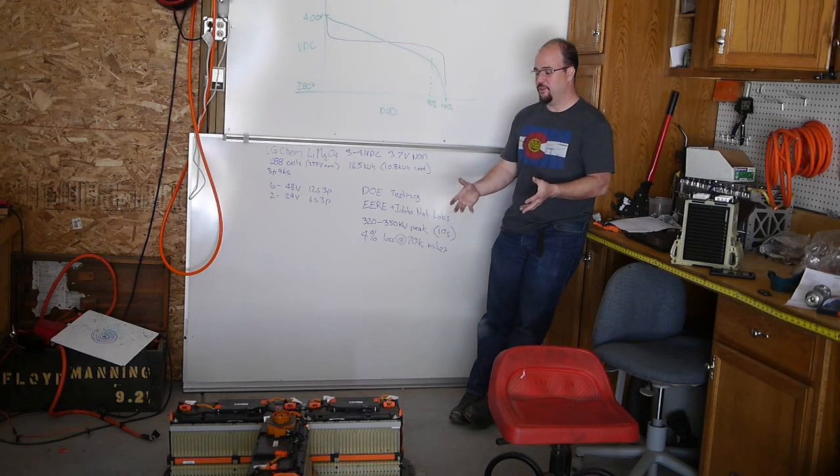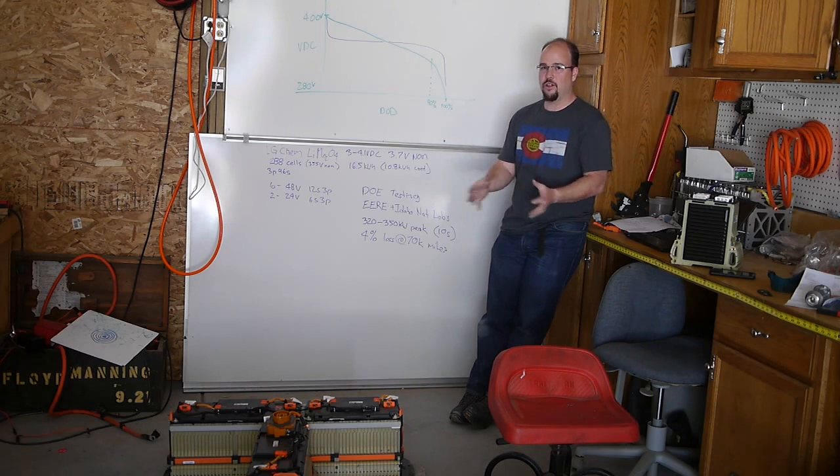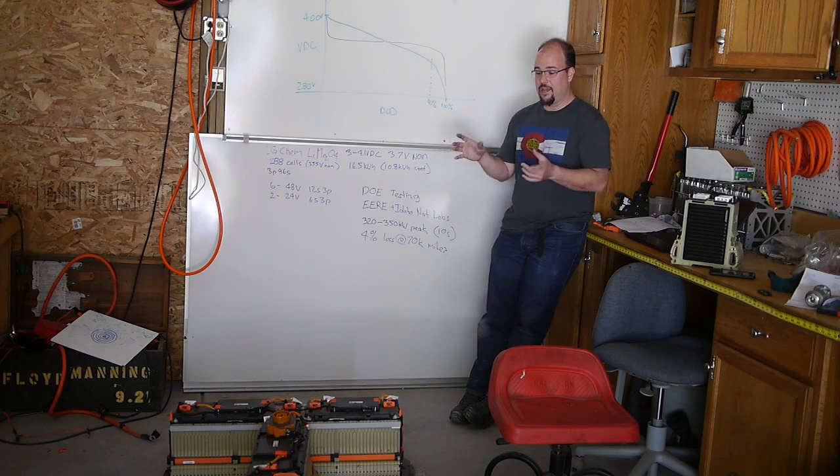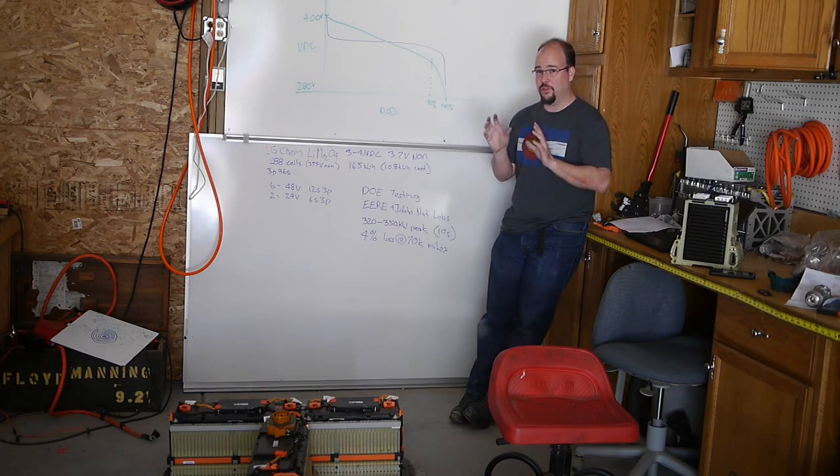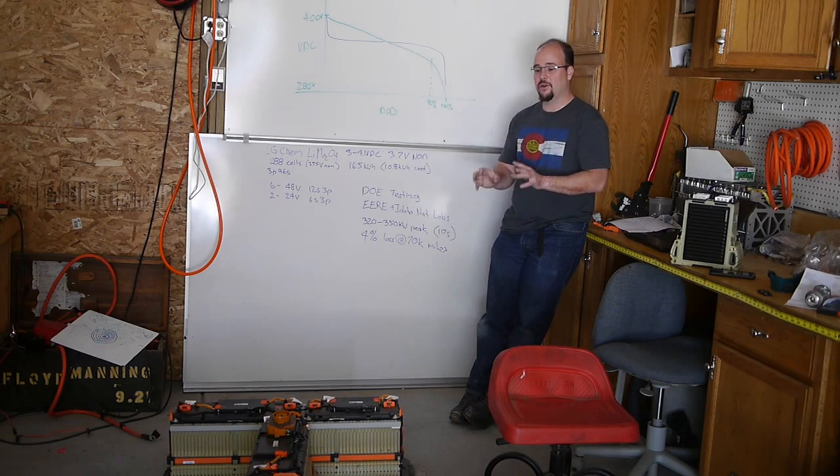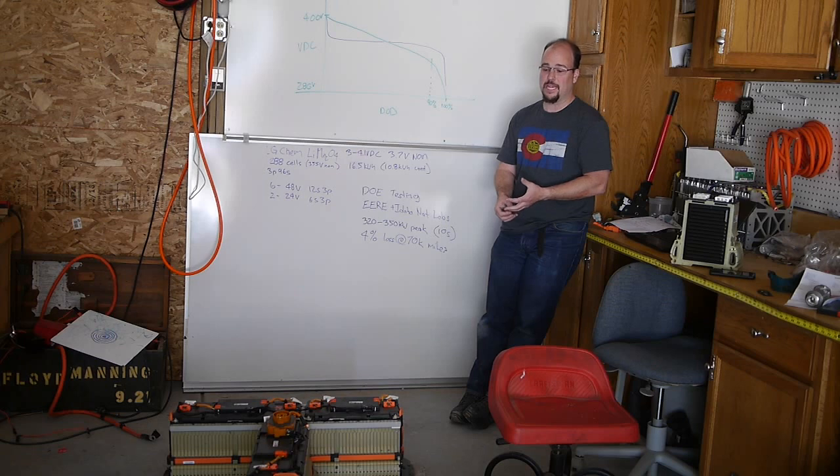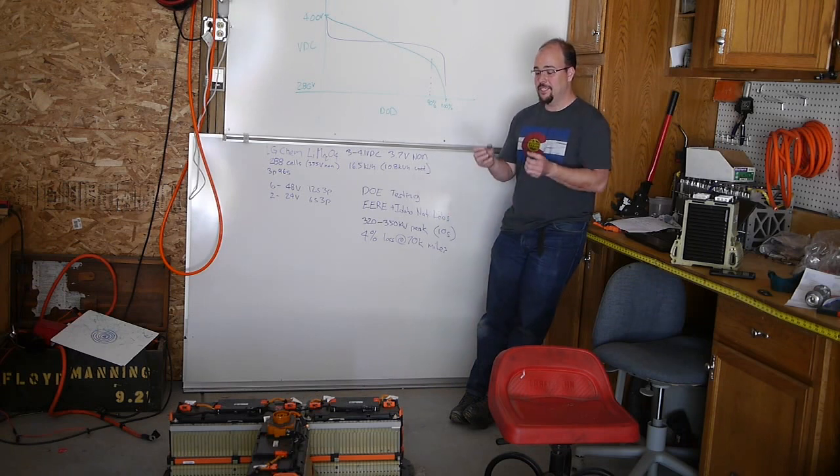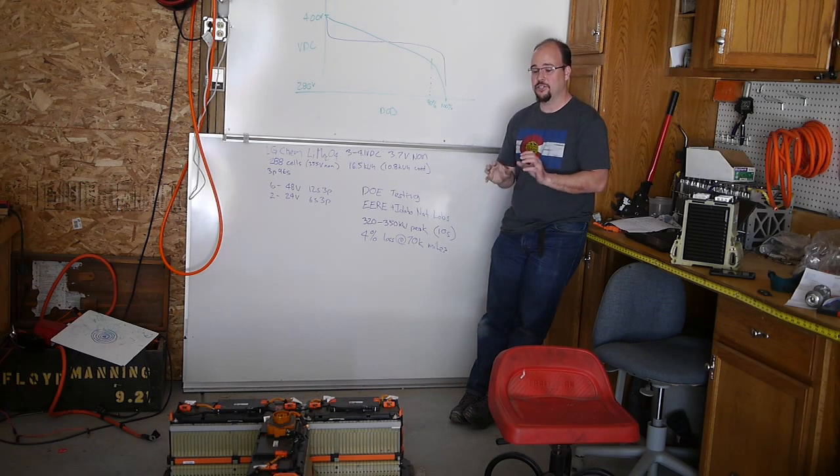So what they did for the testing is they followed three or five Volts through their life and they're continuing to do this testing where they pull the battery pack out. They show a picture of their test setup and they test for capacity. In the Chevy Volt, GM only uses 10.8 kilowatt hours of the 16.5 kilowatt hours in the battery pack. And they do that because they want to be able to maximize the life.